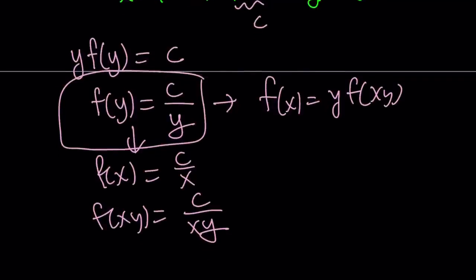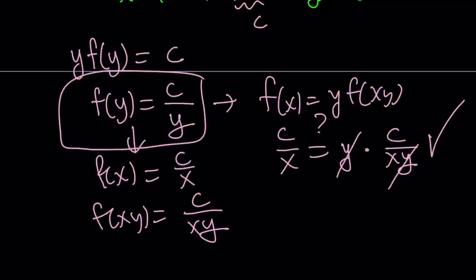So let's go ahead and plug it in. f of x should be c over x. Does that equal the right hand side? y is y. f of xy is c over xy. Here, y cancels out, and we get c over x equals c over x, which is true. As long as x does not equal zero. Of course, for x equals zero, we have a problem. And forget about x equals zero because that should be excluded from the domain. I didn't talk about it, but hopefully you figured it out by now.